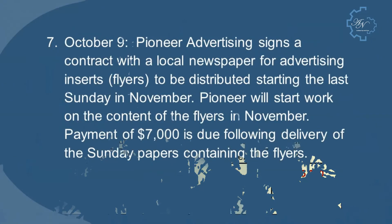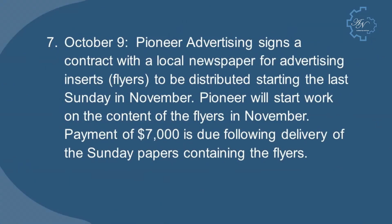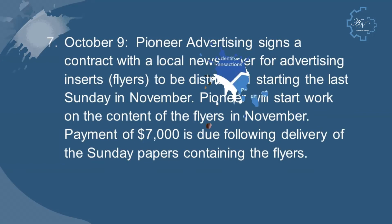October 9: Pioneer Advertising signs a contract with a local newspaper for advertising flyers to be distributed starting the last Sunday in November. Pioneer will start work on the content of the flyers in November. Payment of $7,000 is due following delivery of the Sunday papers containing the flyers. No business transaction has occurred yet, so no journal entry is required.